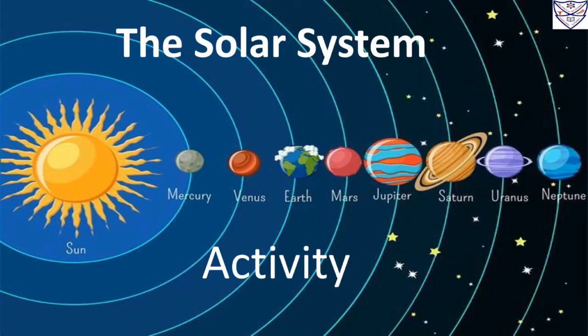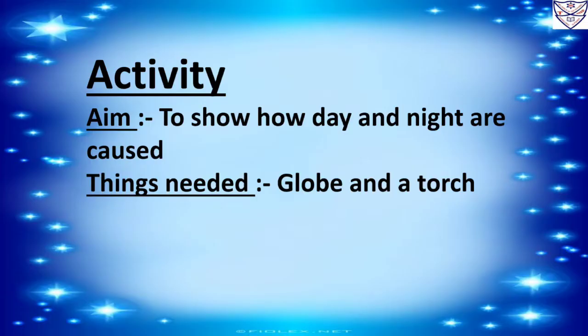Students, today I am going to show you an activity of our new topic, the solar system. Activity aim: to show how day and night are caused. Things needed: a globe and a torch.